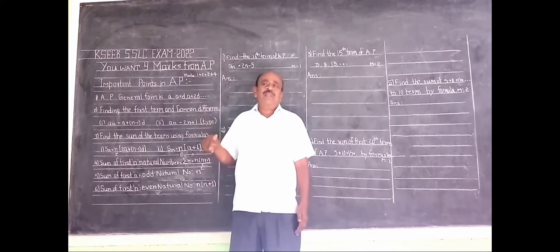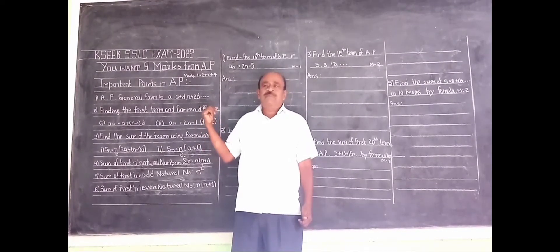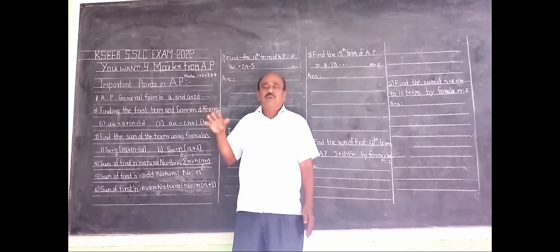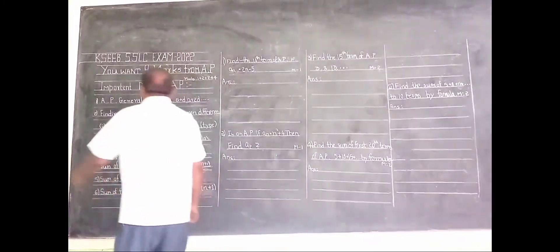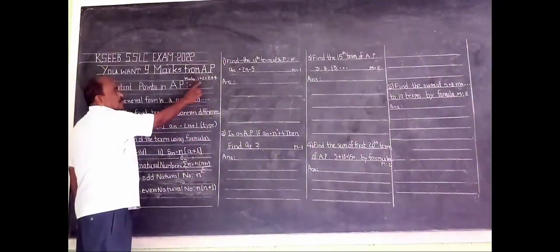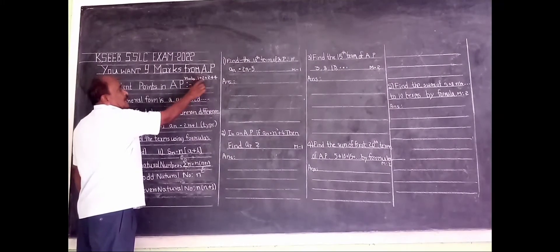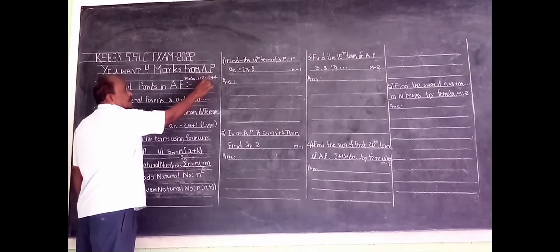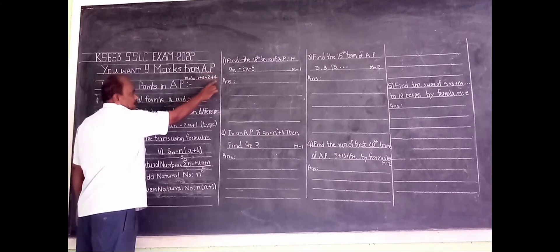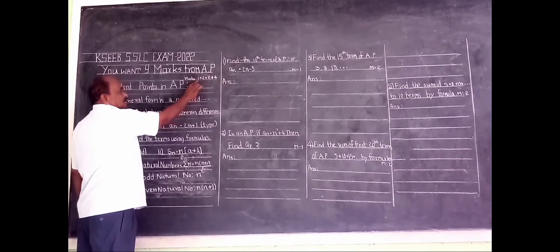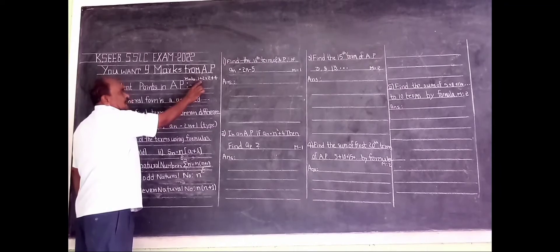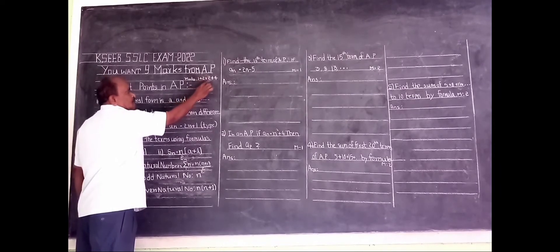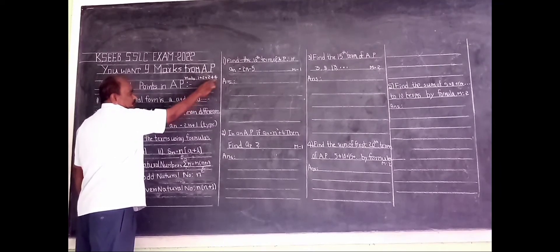In this examination, from arithmetic progression, there will be 9 marks. Look here — the marks are distributed as: 1 mark plus 2 marks plus 2 marks plus 3 marks. Or, 1 mark may be increased to 2, and then 2 marks, and 3 marks.